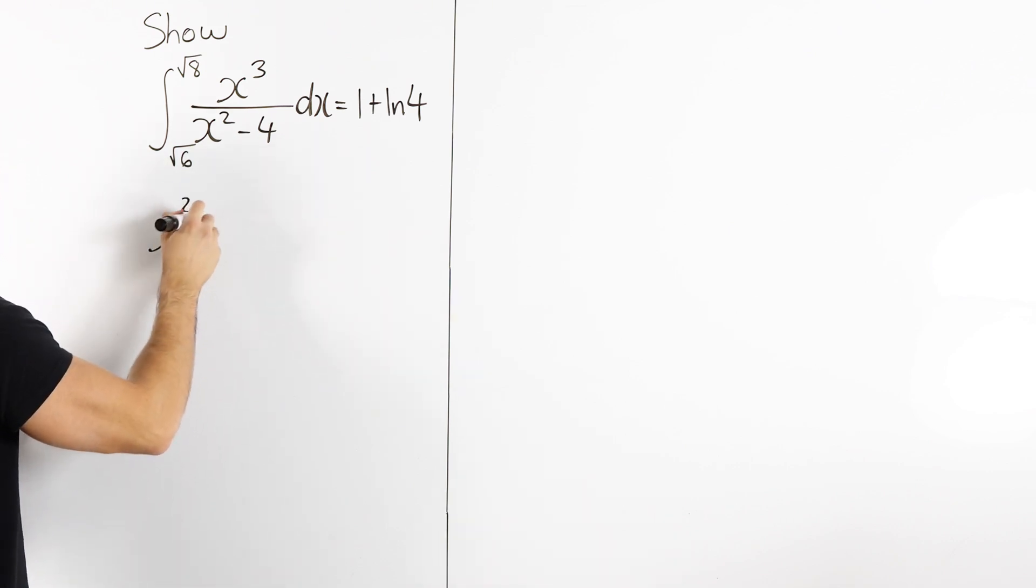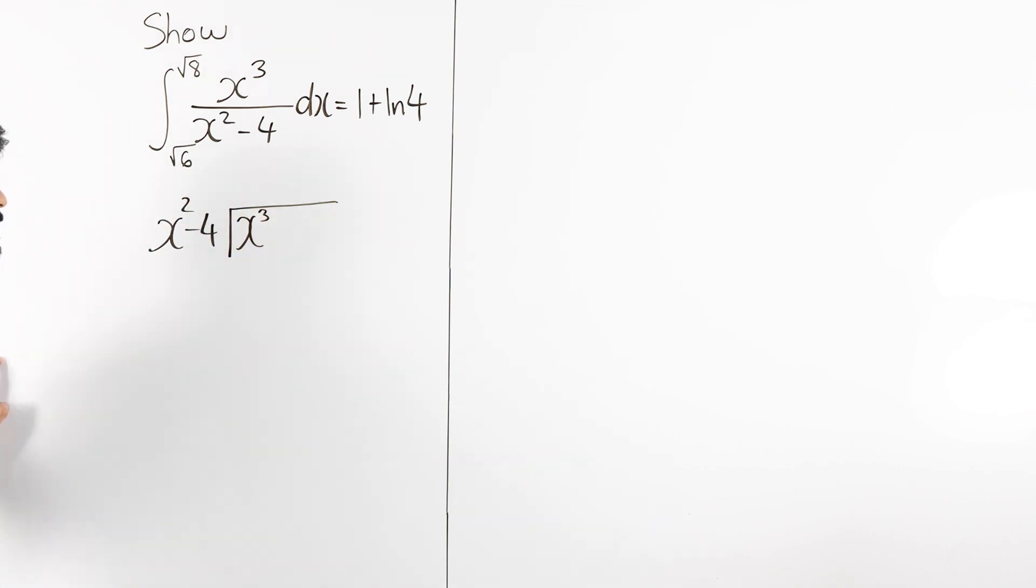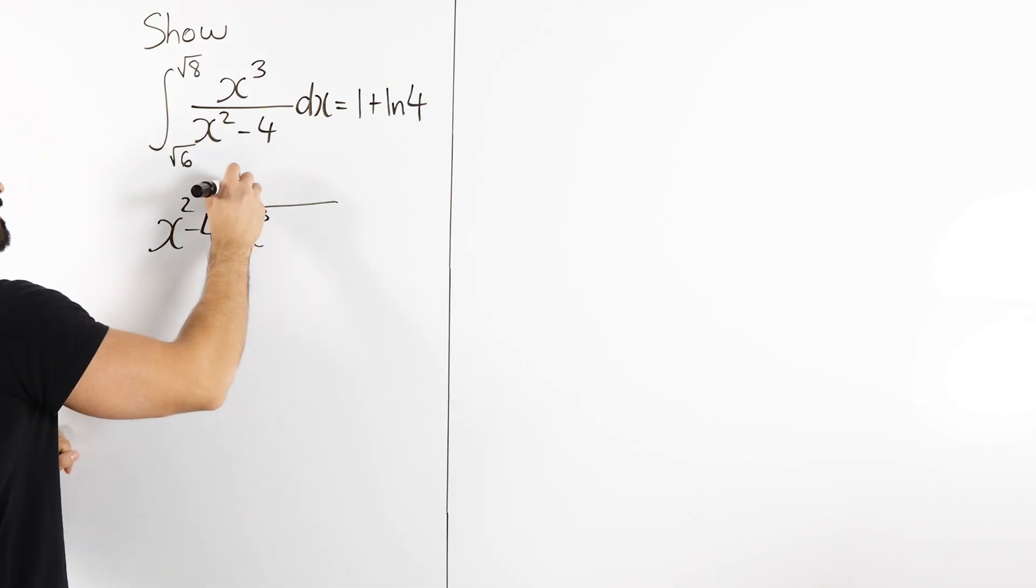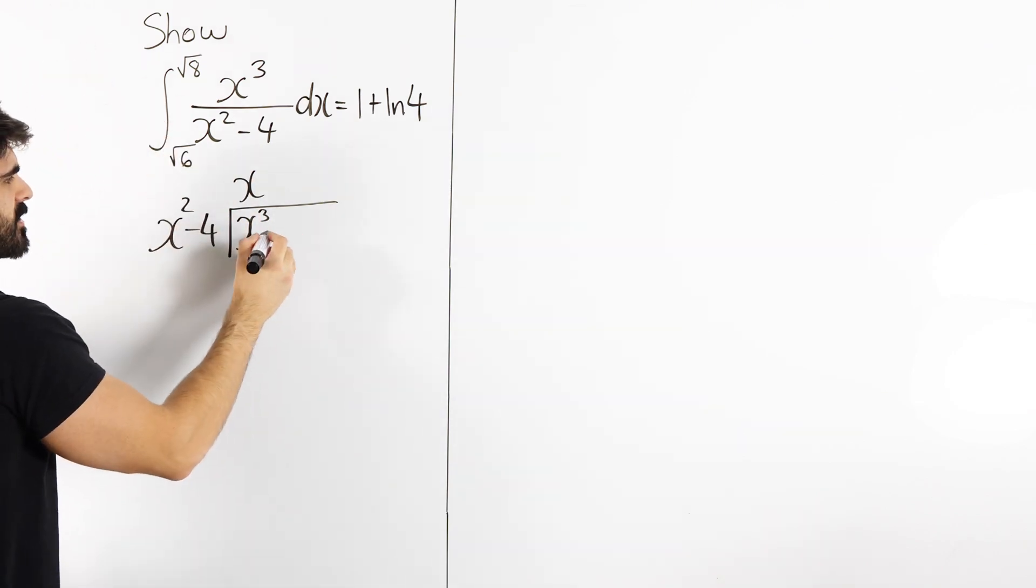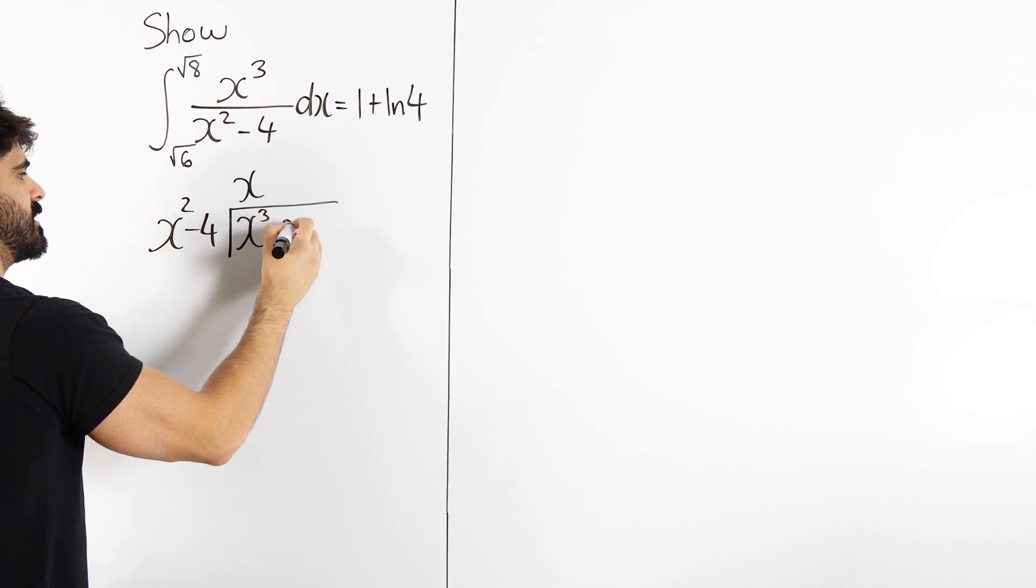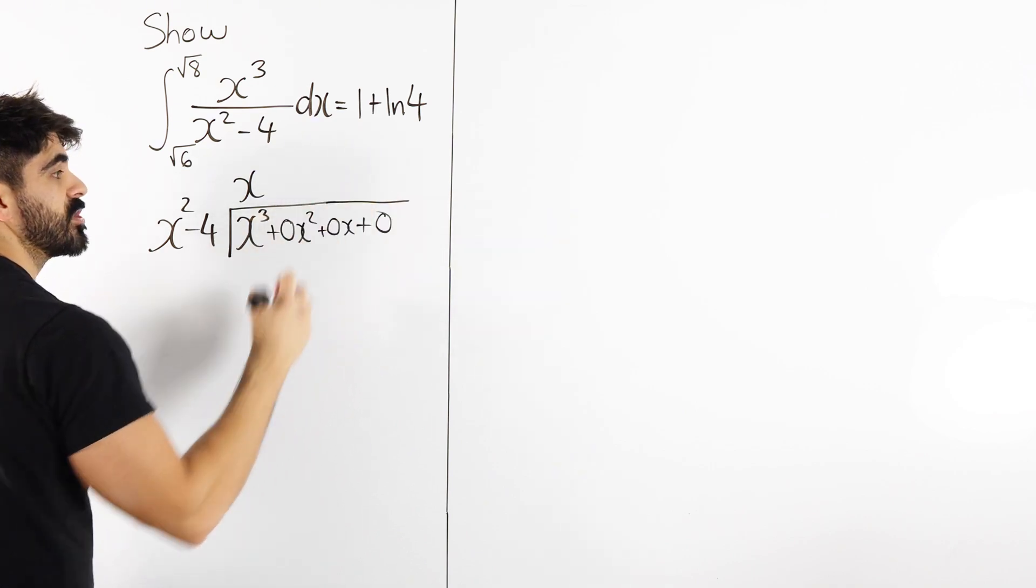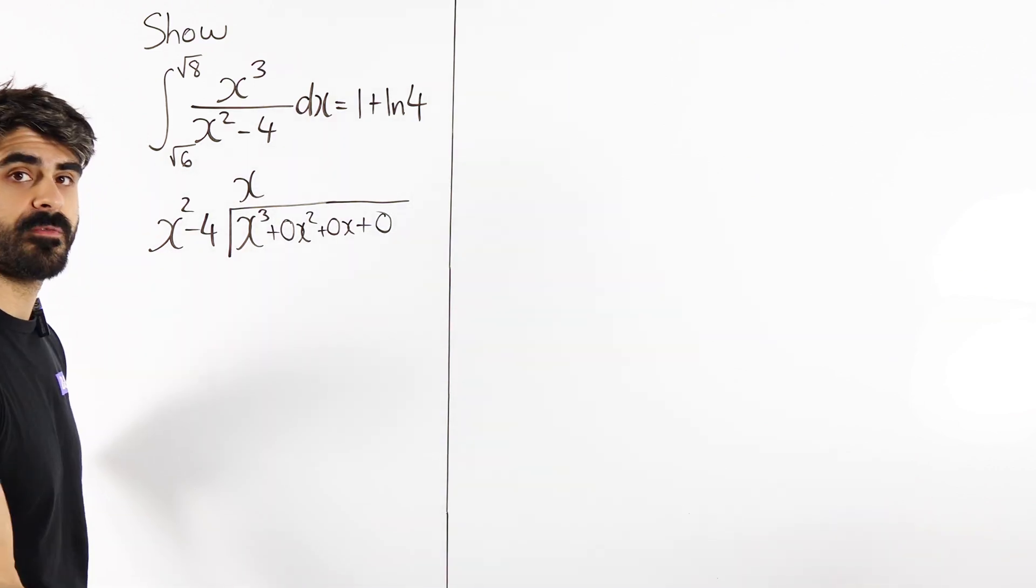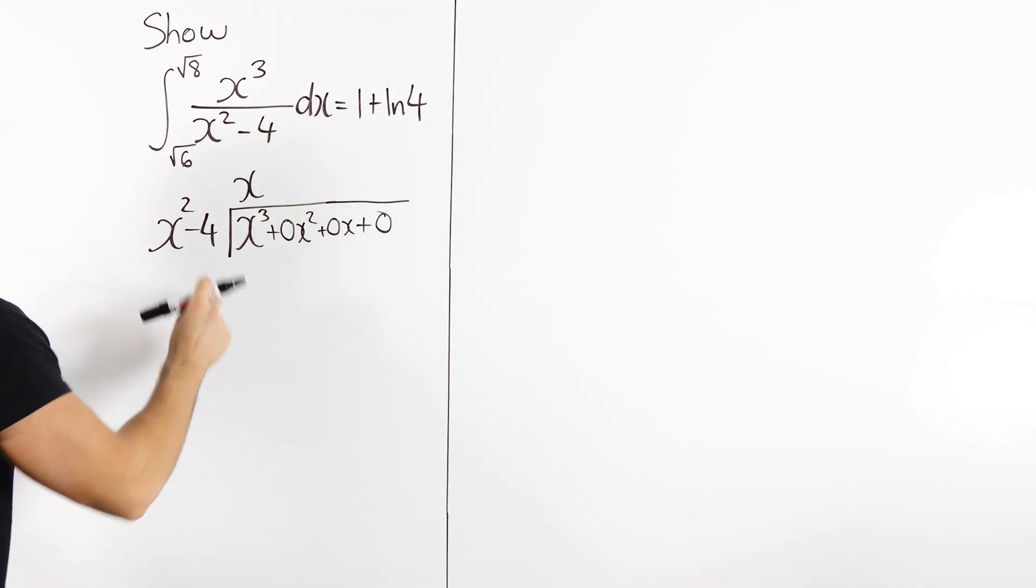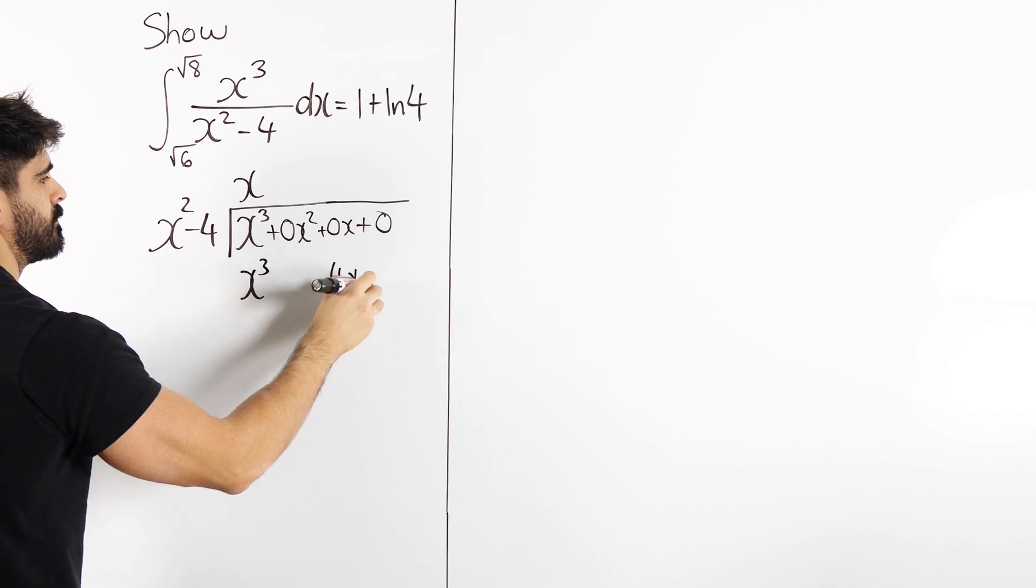So in order to integrate this, we're saying x squared minus 4, how many times does that go into x cubed? We're going to say x squared times what is x cubed? Or x squared times x is x cubed. Then we multiply. Now the interesting thing about this is that we have some missing terms. So you can write 0x squared, 0x, and then 0, because students make this mistake all the time. So multiplying, we get x cubed, then x times minus 4 is minus 4x, and then we subtract.